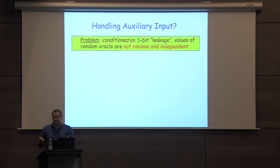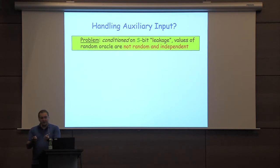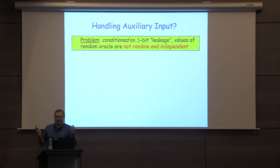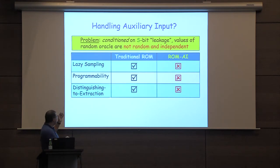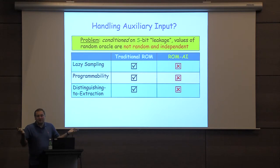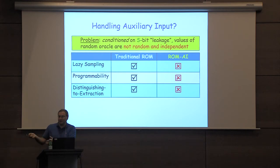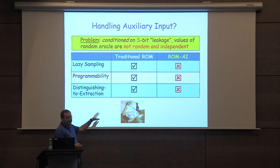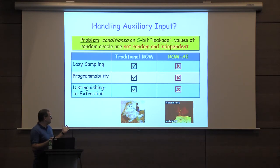But the question is, how do we deal with this random oracle with auxiliary input? When we try to prove it, we have a problem. Conditioned on this s-bit advice about the random oracle — call it leakage — potentially all values of the random oracle are not random and independent. There are some bizarre correlations that are hard to see for general functions. All the beautiful techniques that led to two-line proofs — lazy sampling, programmability — everything disappears here. I cannot just do lazy sampling because maybe the attacker leaks a value; I can't tell if it's consistent with the leakage. It becomes technically challenging even for the simplest tasks such as one-wayness.